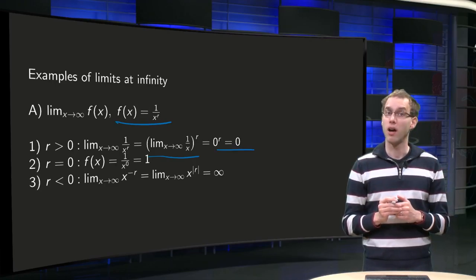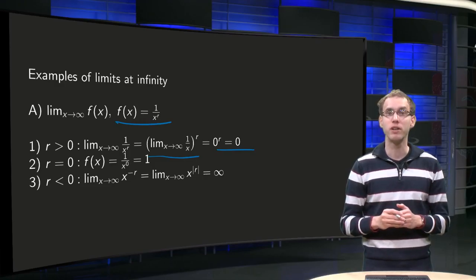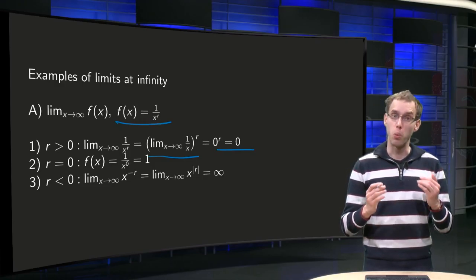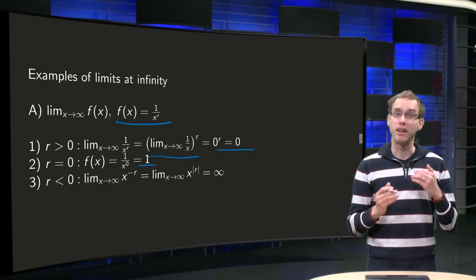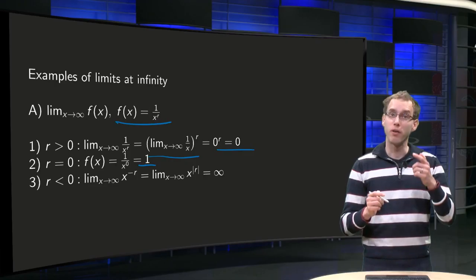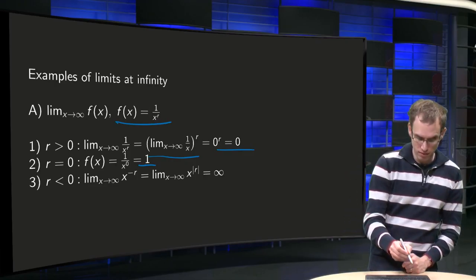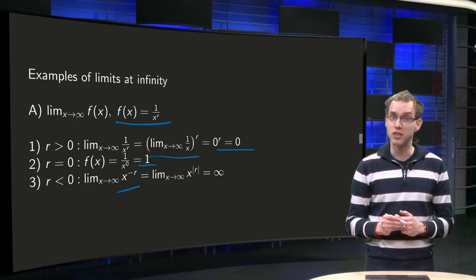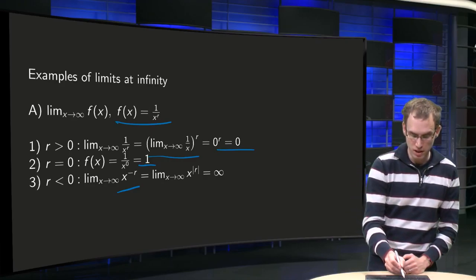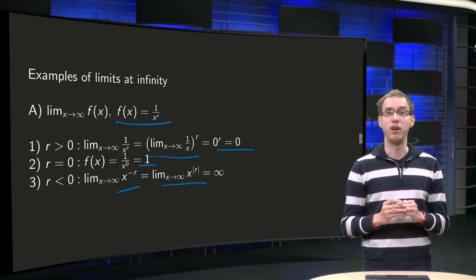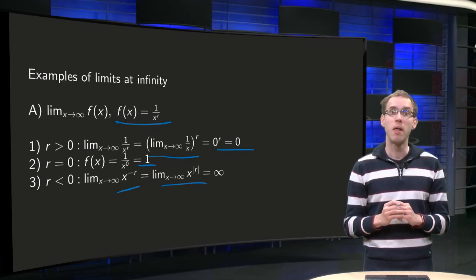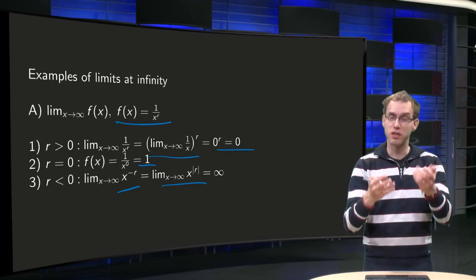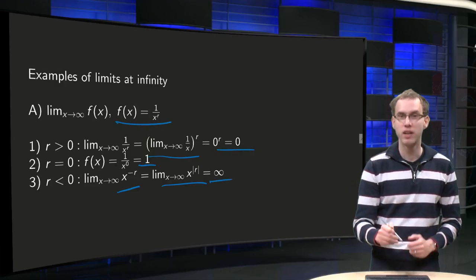Second case: r equals 0. That's an easy one — we have 1 over x to the power 0 equals 1, so the limit of the constant function 1 is just 1. Finally, if r is negative, we have to be slightly more careful: 1 over x to the power r equals x to the power minus r, and since r is negative, minus r is the same as the absolute value of r. So we get the limit of x to the power |r|, which blows up — that limit equals infinity.